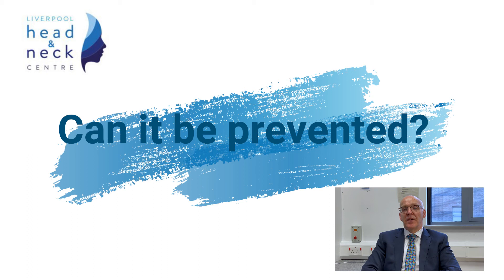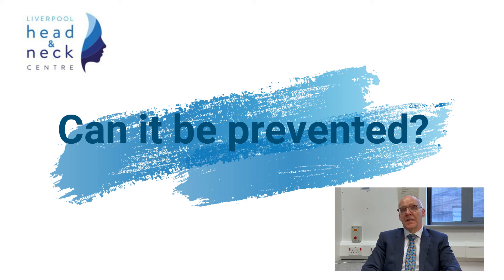These days, there's a highly effective vaccination available which prevents people from getting four types of high-risk HPV infection. These are types 6, 11, 16 and 18. As this vaccine needs to be given before exposure to the virus and therefore before individuals become sexually active, the vaccine is given to school children in year eight, with a second dose given 6 to 12 months after the first. Girls have been offered vaccination in the UK since 2008 and boys since 2019. In fact, research we conducted in Liverpool led to the government reversing its earlier decision not to vaccinate boys, so that now boys are vaccinated as well as girls.